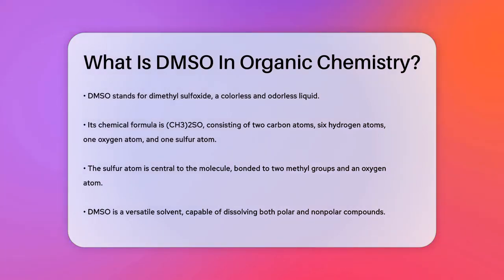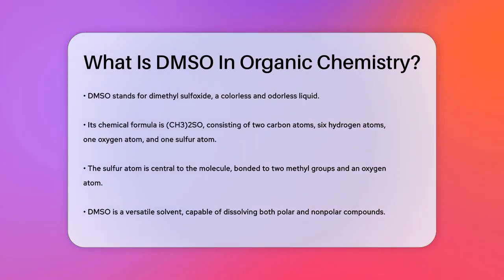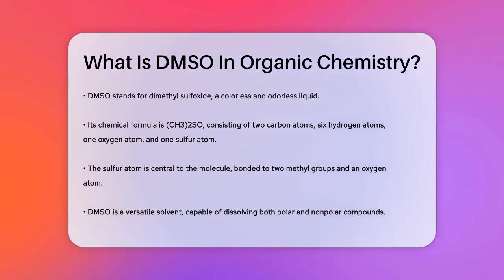DMSO has the chemical formula (CH₃)₂SO, which means it contains two carbon atoms, six hydrogen atoms, one oxygen atom, and one sulfur atom. The sulfur atom is the central part of the molecule, binding to two methyl groups and an oxygen atom. This unique arrangement gives DMSO its special properties.